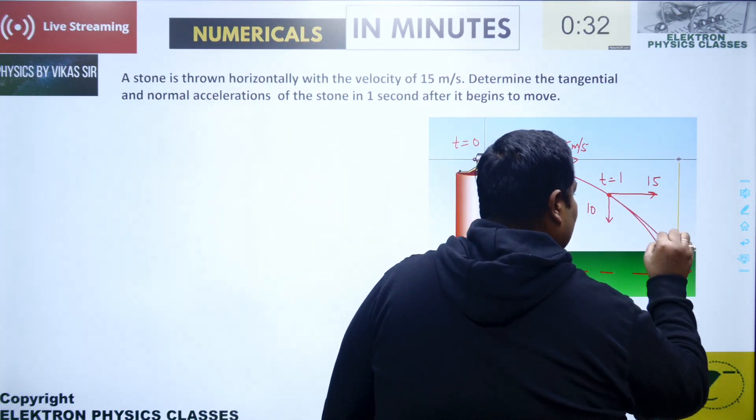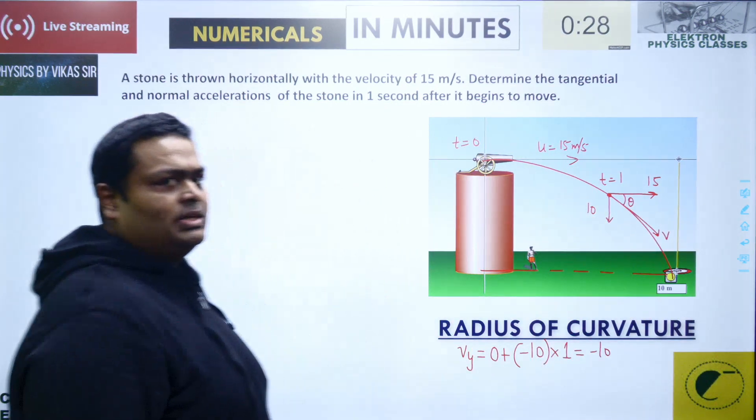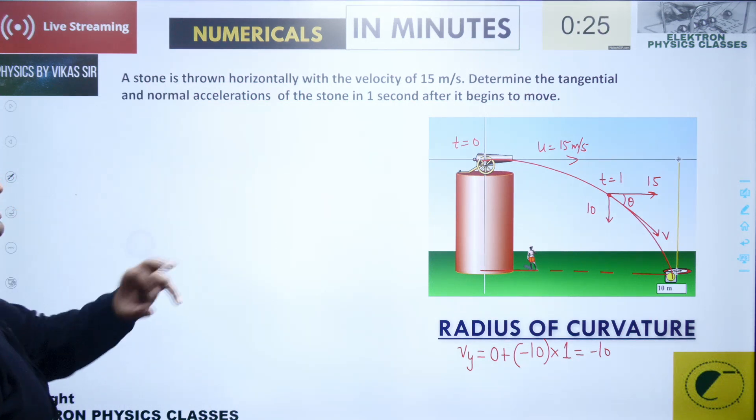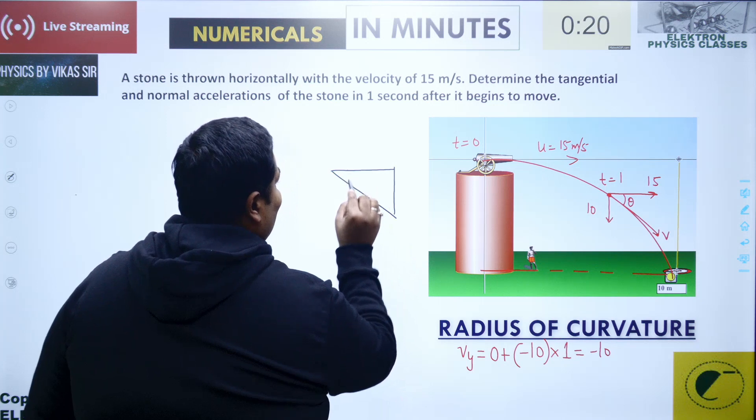So from here, the net velocity is in this direction. This angle we assume as theta. We can find this angle from the triangle. If you check this triangle over here, this is theta.